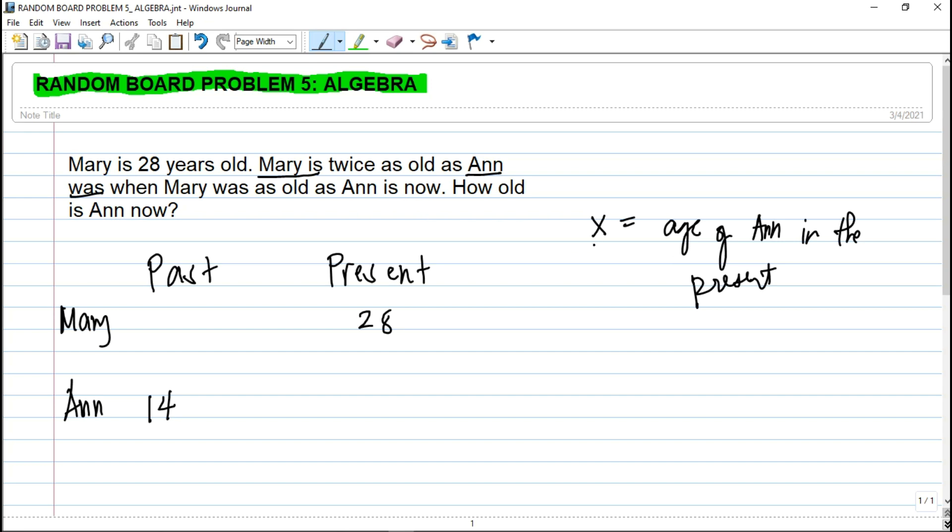So Mary's past age is equal to Ann's present age. Now we let x be Ann's present age, equal to the past age of Mary.